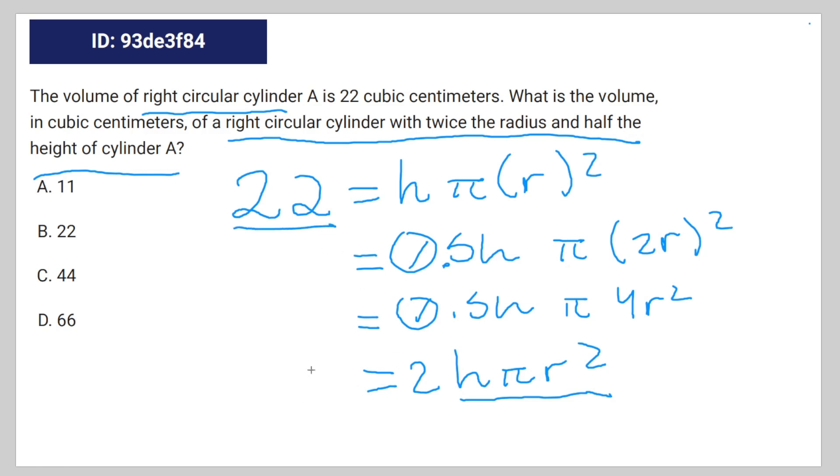So to find X, the volume of the second right circular cylinder, we just have to times that by 2, which is 44.